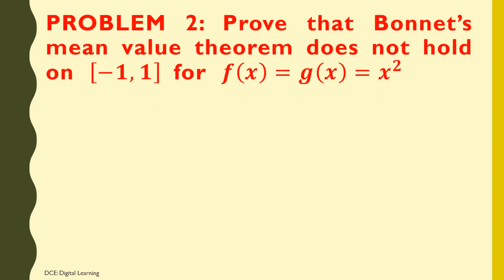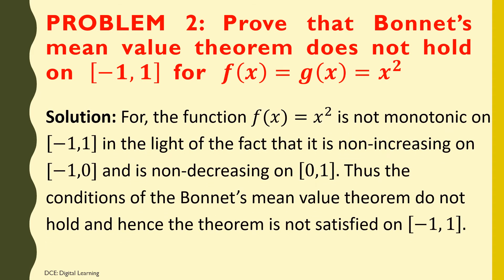Problem 2: Prove that Bonnett's mean value theorem does not hold on [-1, 1] for f(x) = x² and g(x) = x². Solution: The function f(x) = x² is not monotonic on [-1, 1], in the light of the fact that it is non-decreasing on [-1, 0] and non-decreasing on [0, 1]. Thus the conditions of Bonnett's mean value theorem do not hold, and hence the theorem is not satisfied on [-1, 1].